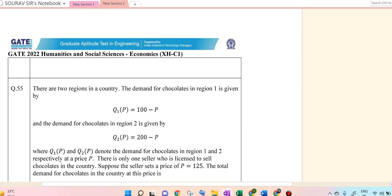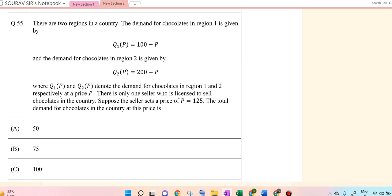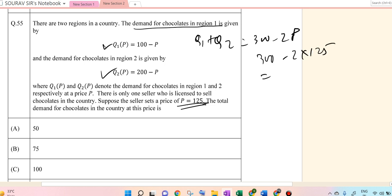Next, Q55. There are two regions in a country. Region 1 gives this, so total demand you can just add it, q1 plus q2, so that is 300 minus 2P. And price is 125. So 300 minus 2 into 125, this is 250, that is giving you 50.